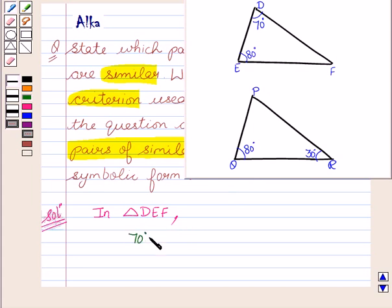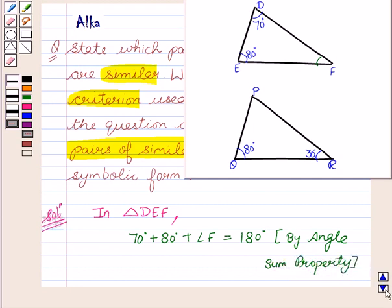So, 70 degrees plus 80 degrees plus angle F equals 180 degrees. This is by angle sum property.